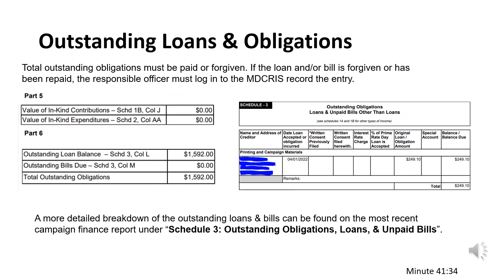Total outstanding loans and obligations must be paid or forgiven. If the loan or bill has been forgiven or paid, the responsible officer must log into MDCRIS to record the entry. A committee can determine if all loans and obligations have been addressed by reviewing page 2, section 6 of their most recent campaign finance report. This section will show the remaining outstanding loan balances. If the section shows zero, no further action is required, assuming all previous transactions related to loans or bills have been recorded accurately. For committees who file affidavits or ALCEs, this section of the presentation is not applicable.